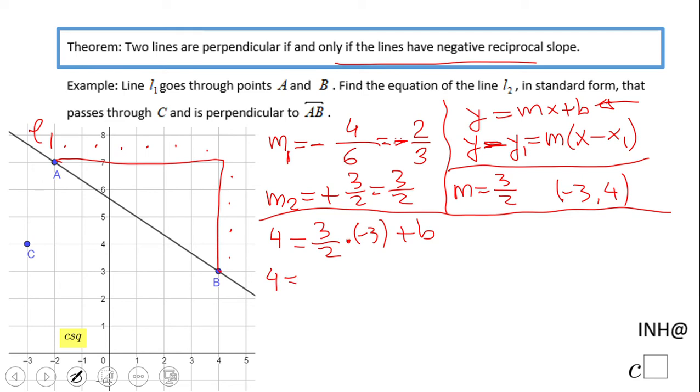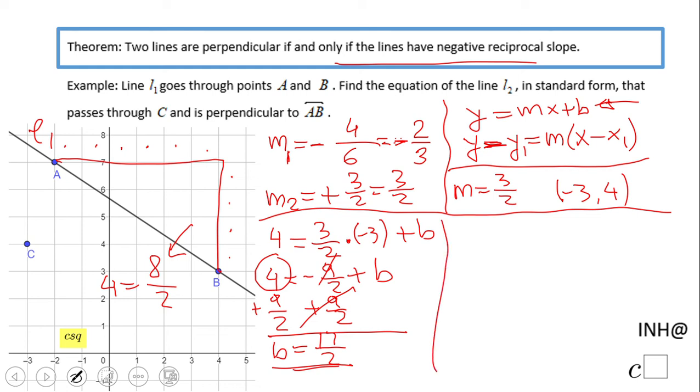So we're going to have 4 equals negative 9 over 2, because 3 times negative 3 is 9. Negative 9 plus b. And we're going to have 9 halves here to 4. Now, it's good if you remember that 4 is nothing goes on the 8 over 2. So what do we get here? We get here b equals 8 over 2, plus 9 over 2, 17 over 2. So that is how much b is, 17 over 2. So we have now the equation, 3 halves x plus 17 over 2.